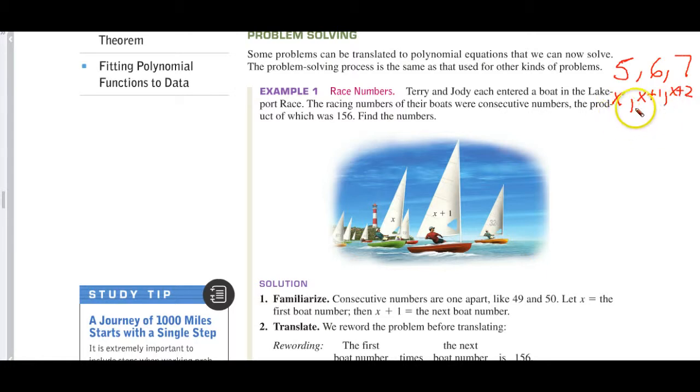Now, if they were consecutive even numbers, we would have 6, 8, 10. X would be our first number. Our next consecutive even number would be X + 2, and the next even number would be X + 4.